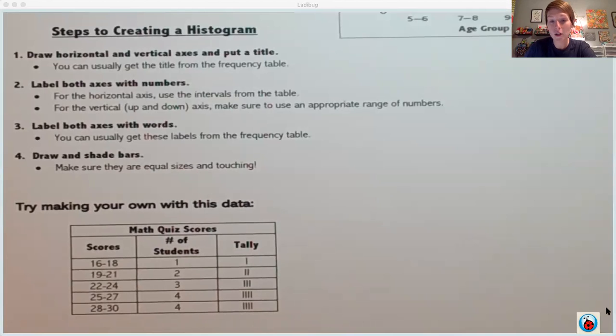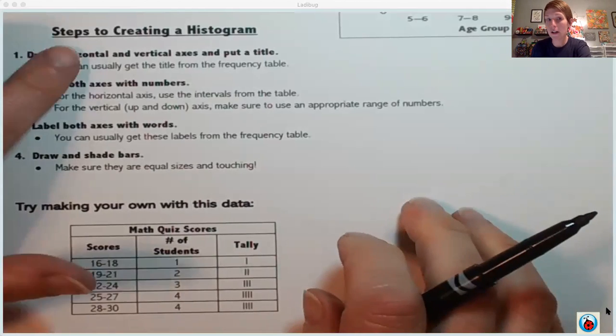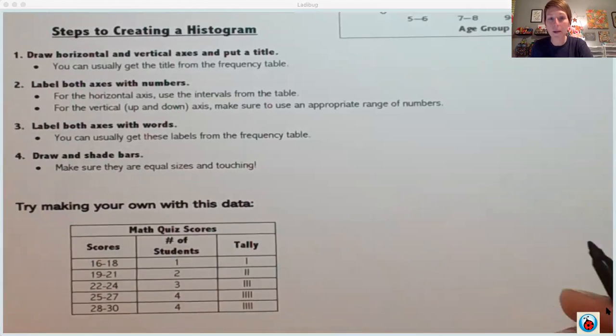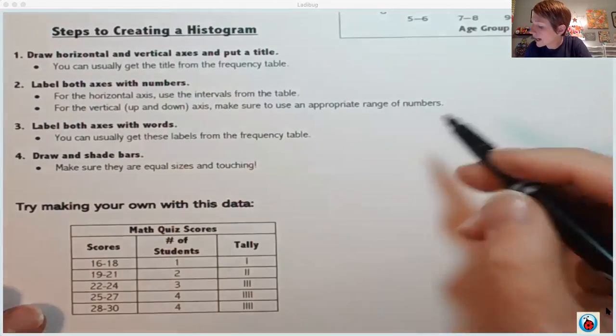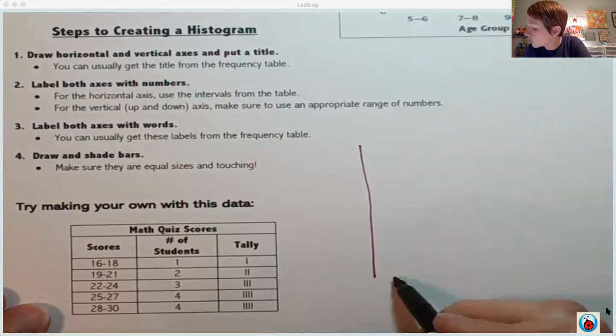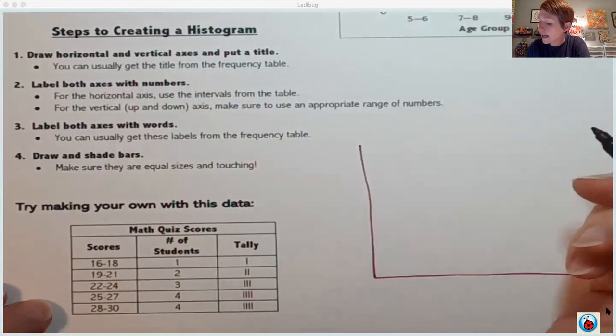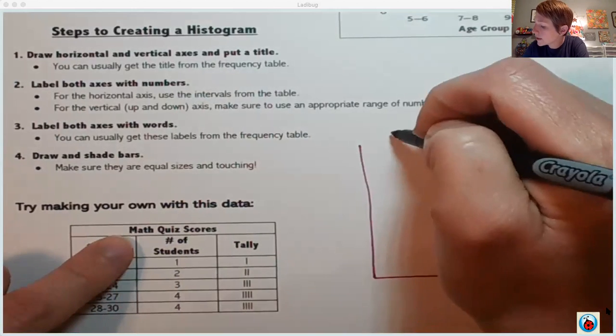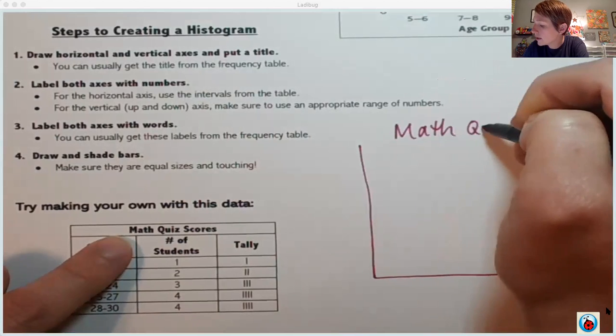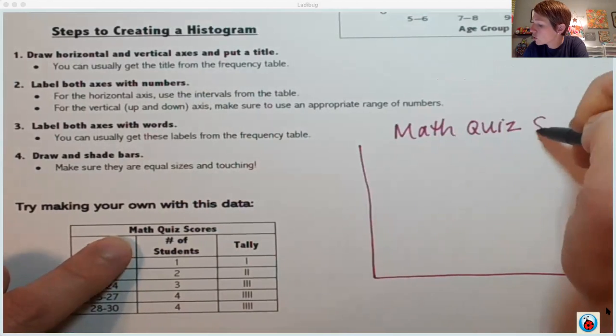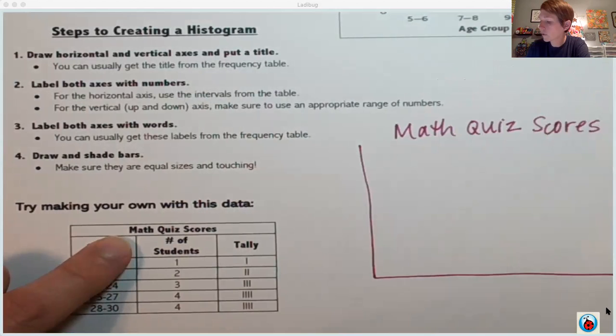All right, hopefully you've made your histogram. I'm going to make mine over here following these steps and you can see how you did. First step is draw my two axes and put a title. So I'm just going to draw kind of what looks like a big L and I'm going to get the title right here from this table. Math quiz scores.